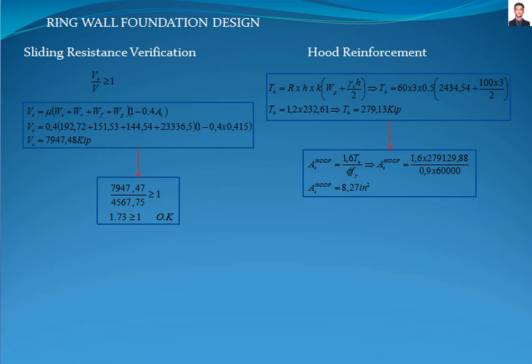The next step is to calculate the required hoop tension reinforcement AS with the equation of section 5.6.3.4 of PIP STE 03-020, where φ is the reduction factor according to Table 21.2.2 of ACI 318 for members in tension. The required hoop tension reinforcement is 8.27 square inches.